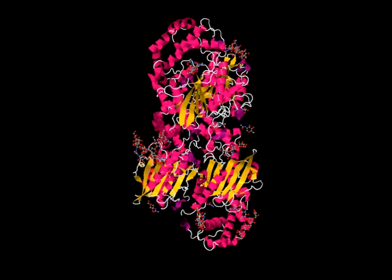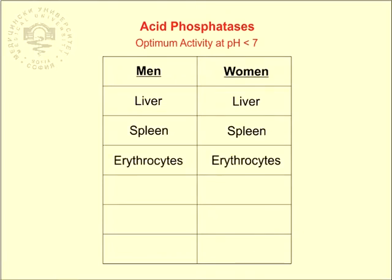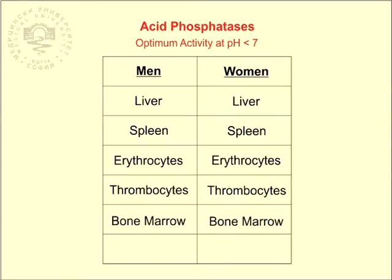The group of phosphatases whose optimum activity is under pH 7 are generally called acid phosphatases. These enzymes are found in the liver, spleen, milk, erythrocytes, thrombocytes, bone marrow, and the male prostatic gland.